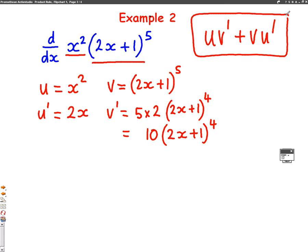Plug them into this formula. u v dash is going to be 10x squared, 2x plus 1 to the power of 4. Add v u dash, which is just going to be 2x times 2x plus 1 to the power of 5.